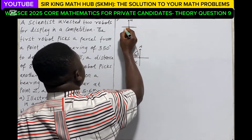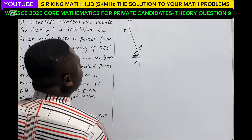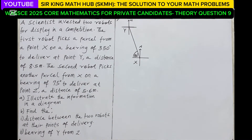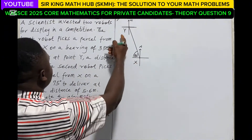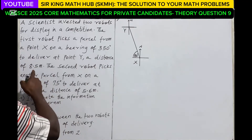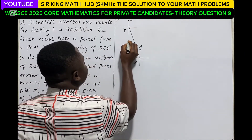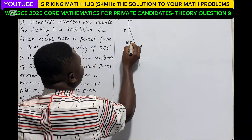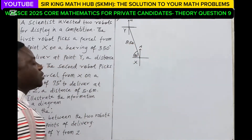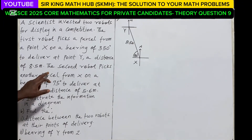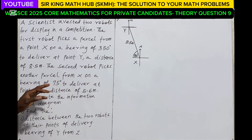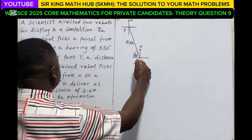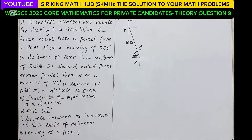So this would be point X, and the distance from X to point Y is 8.5 meters. So the distance here is 8.5 meters. There is also a second robot, and this second robot takes another parcel from the same point X, this time on a bearing of 75 degrees, to deliver at point Z.